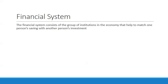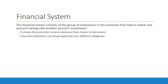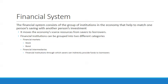The financial system consists of institutions in the economy that help match savers' savings with borrowers' investments, moving scarce resources from households to firms. Financial institutions fall into two categories: financial markets — stocks and bonds — and financial intermediaries, such as banks and credit institutions, through which savers indirectly provide funds to borrowers.